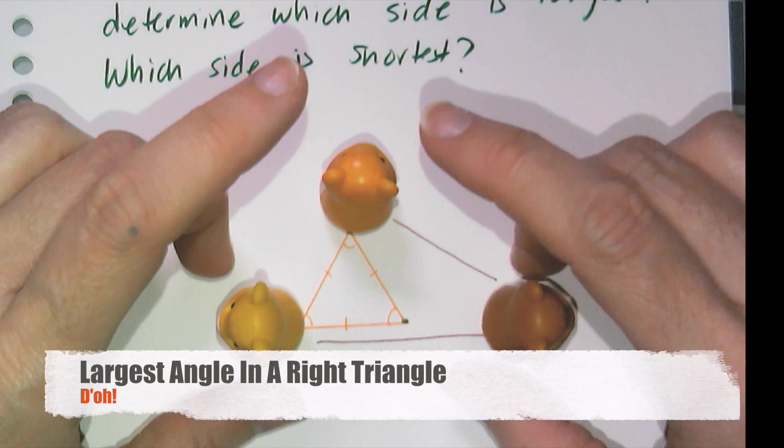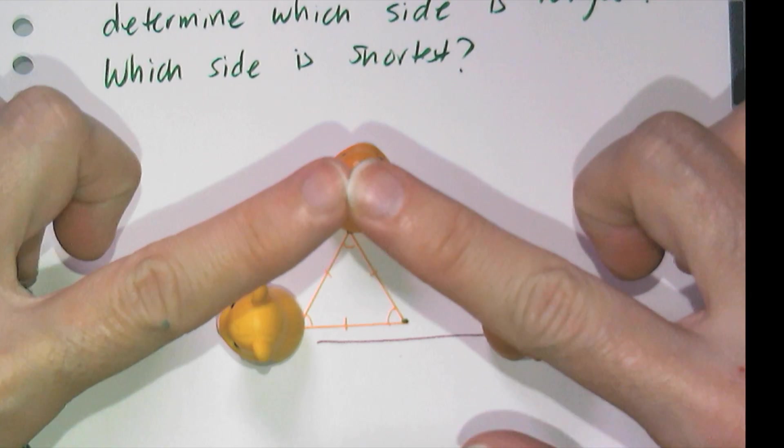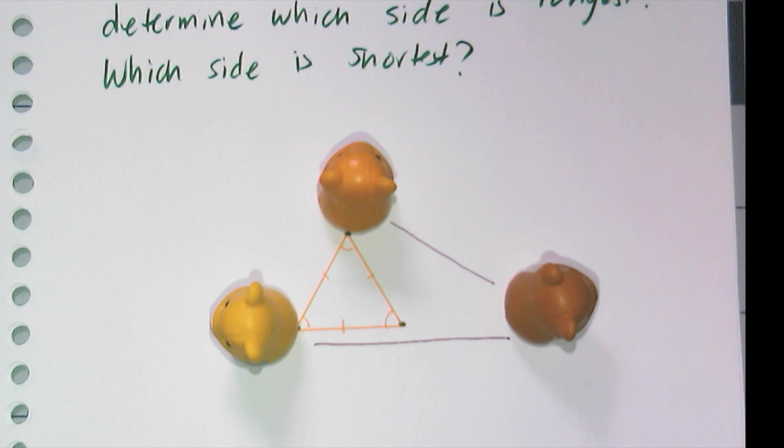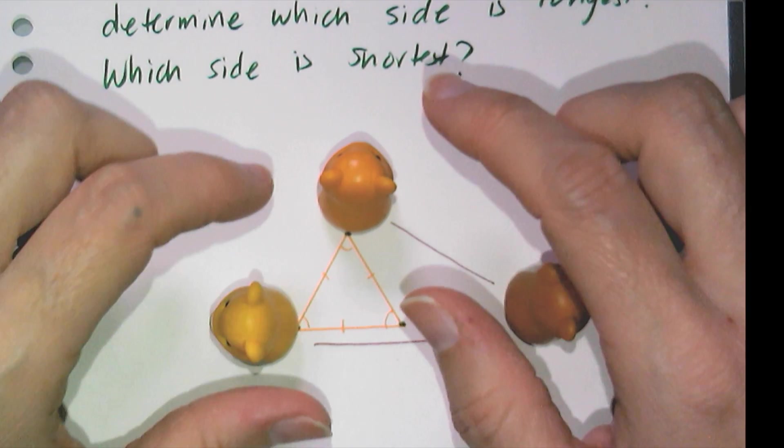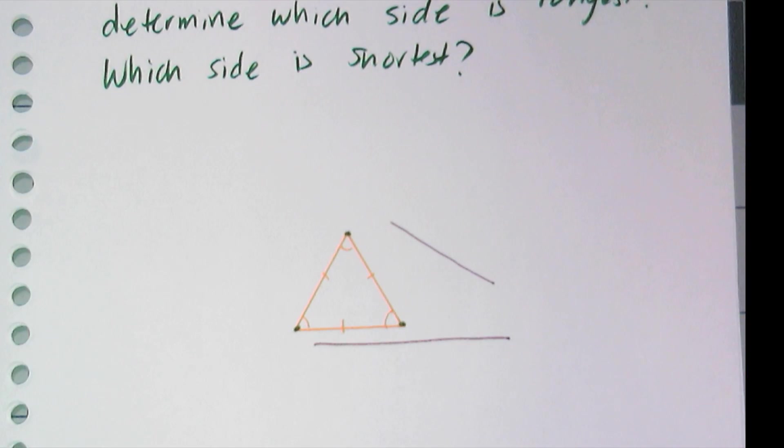And we've worked with obtuse triangles enough to know that the side opposite the obtuse angle has to be really long to span that gap. And so it appears to me just from my observations that the largest angle is going to be opposite the largest side. And it is!